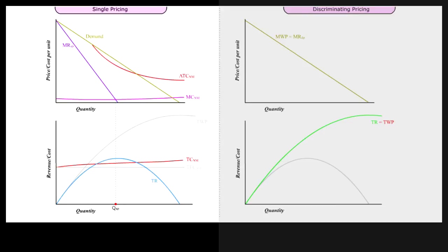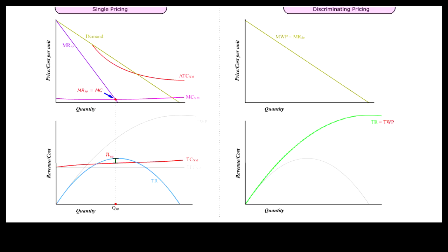At MRSP equal to MC, output is too low to take advantage of the scale economy and profit TR minus TC is too low, even though price is quite high. But a price discriminating monopolist with the same cost curves would be able to produce much higher output level, QDP, with a much higher profit by setting MRDP equal to MC.